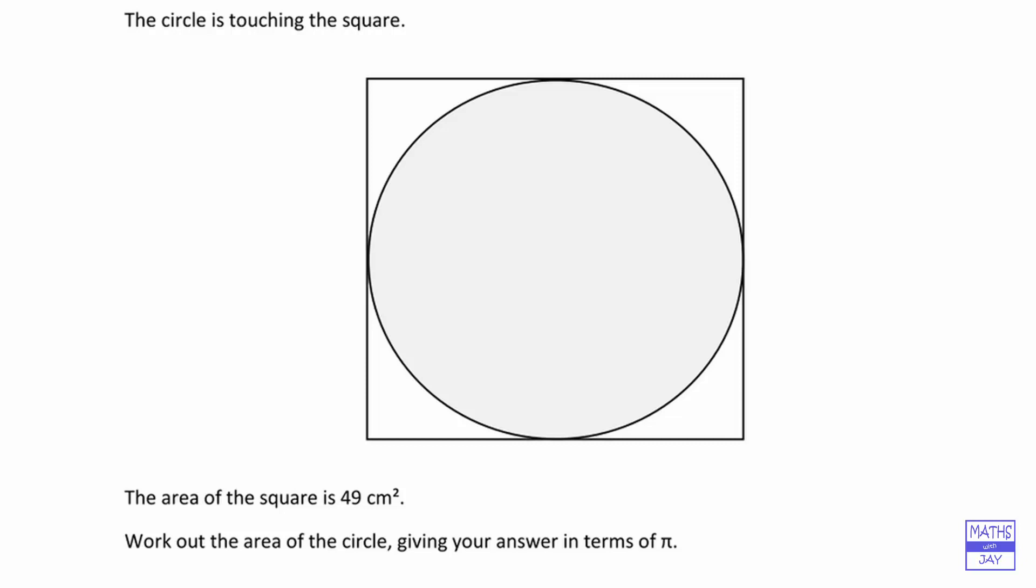So that tells us that the side of the square, that each side of the square of course, is the same as the diameter of the circle. So if we want to, we could just show that on the diagram.